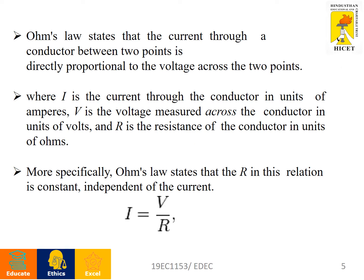Ohm's Law states that the current through a conductor between two points is directly proportional to the voltage across those two points. Here, I is the current flowing through the conductor — the unit of I is amperes. V is the voltage across the conductor — the unit of voltage is volts. R is the resistance — the unit of resistance is ohms.